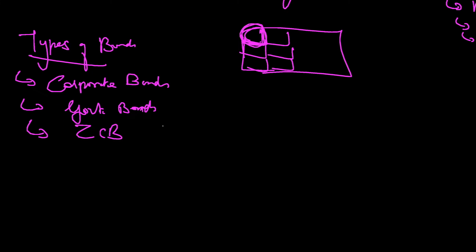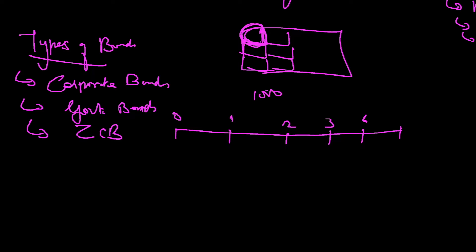Zero coupon means the company is not issuing any coupon at all — so why would anybody invest in this bond? A typical bond works like this: imagine a five-year bond with a principal of 1,000 rupees and an interest rate of 10%. So 10% of 1,000 is 100. Every year the company keeps paying 100, and at the time of maturity they pay back the principal of 1,000.